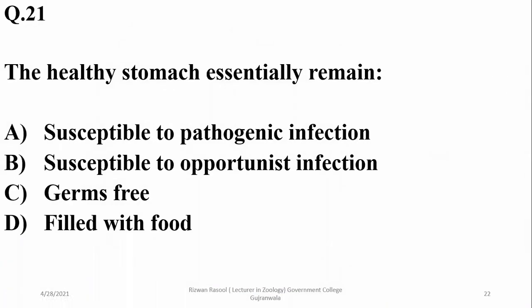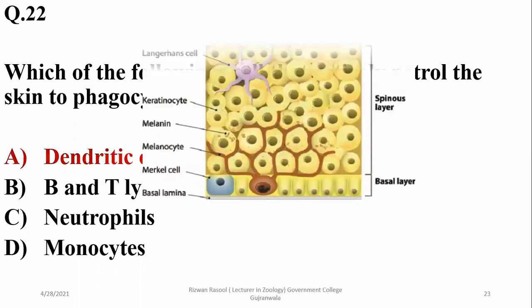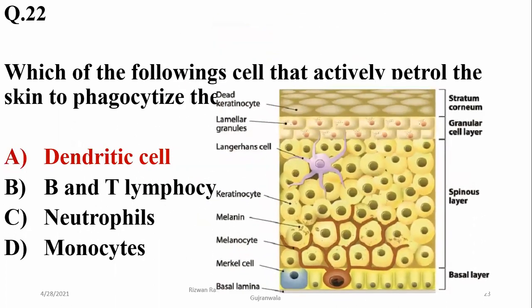Question 21: the healthy stomach essentially remains germ-free because it contains a strong antiseptic agent — hydrochloric acid. Question 22: which cell actively patrols the skin to phagocytize pathogens? These are dendritic cells, which move through the skin performing phagocytic activity.